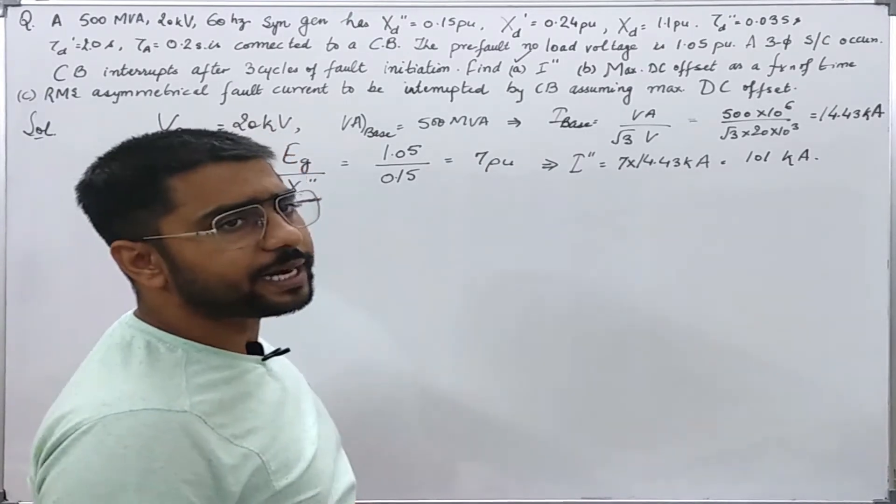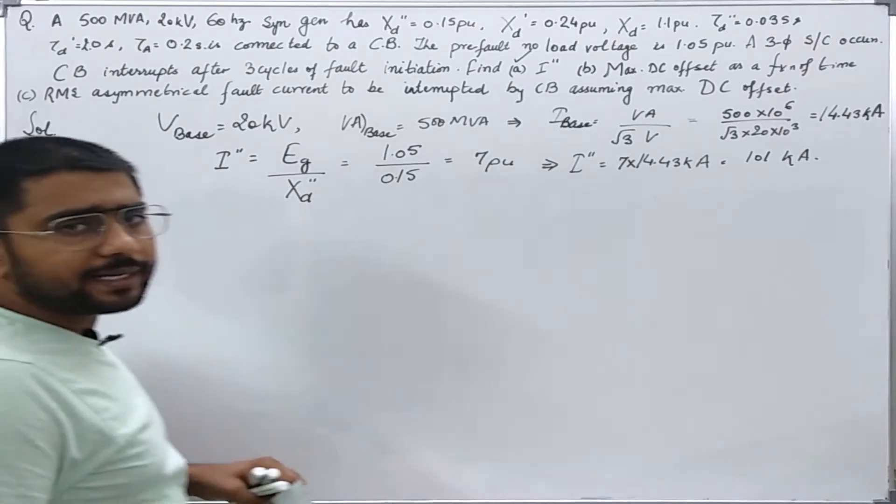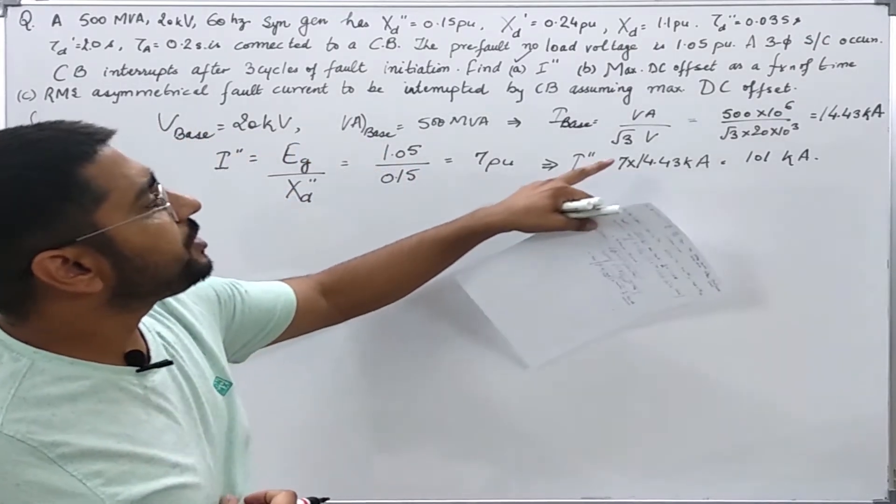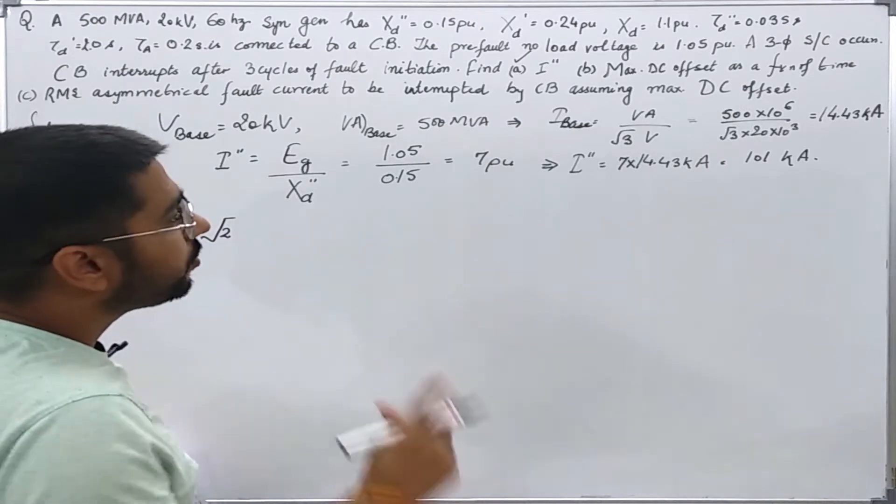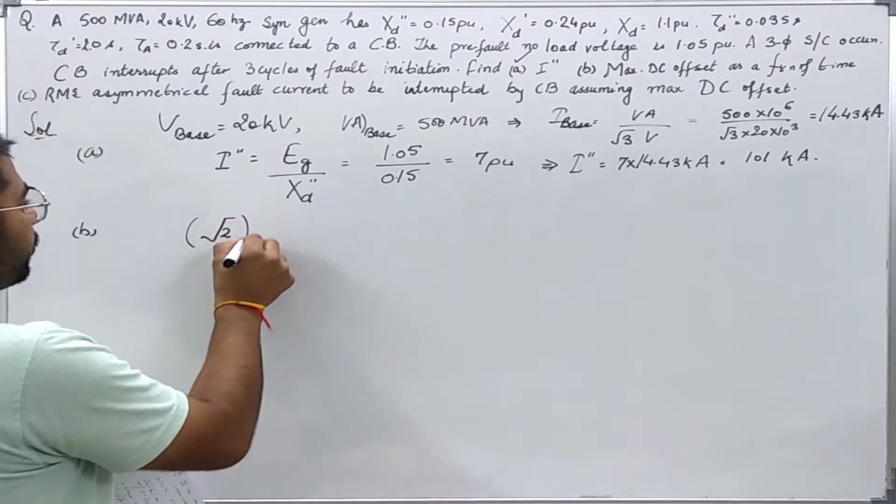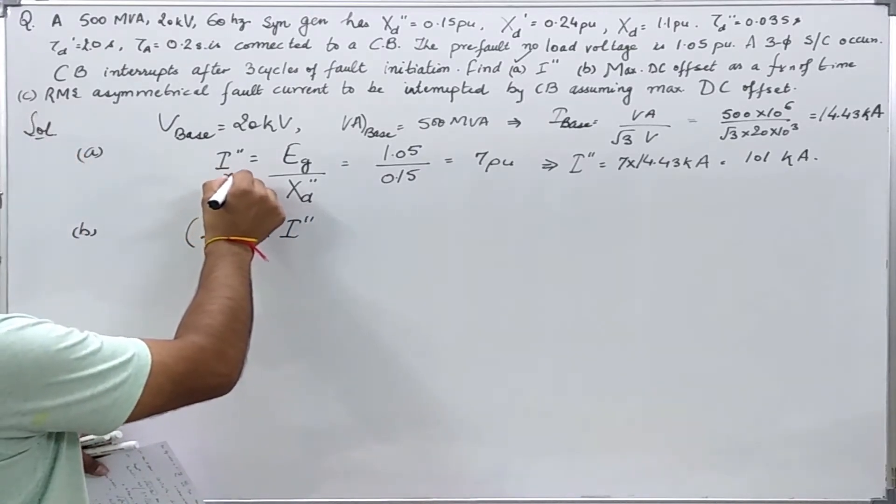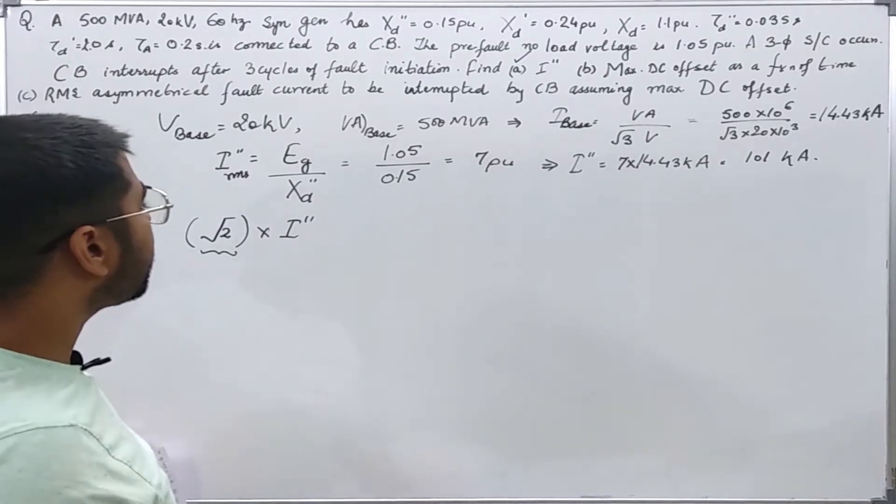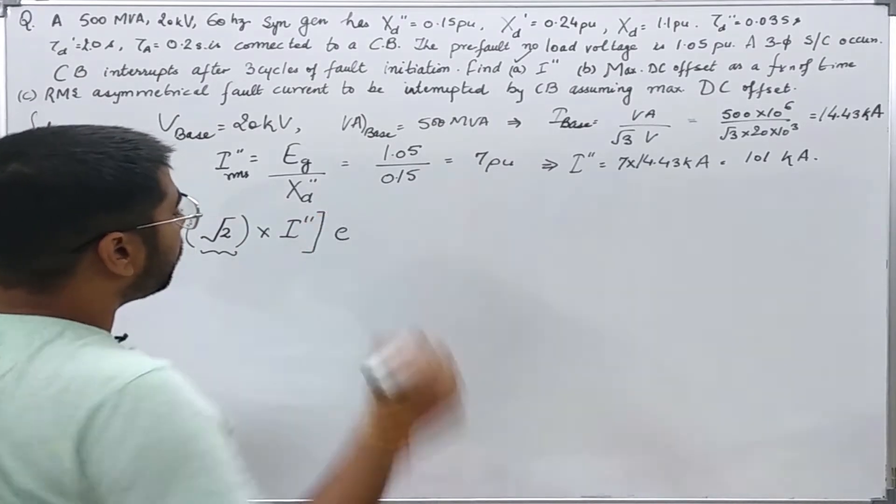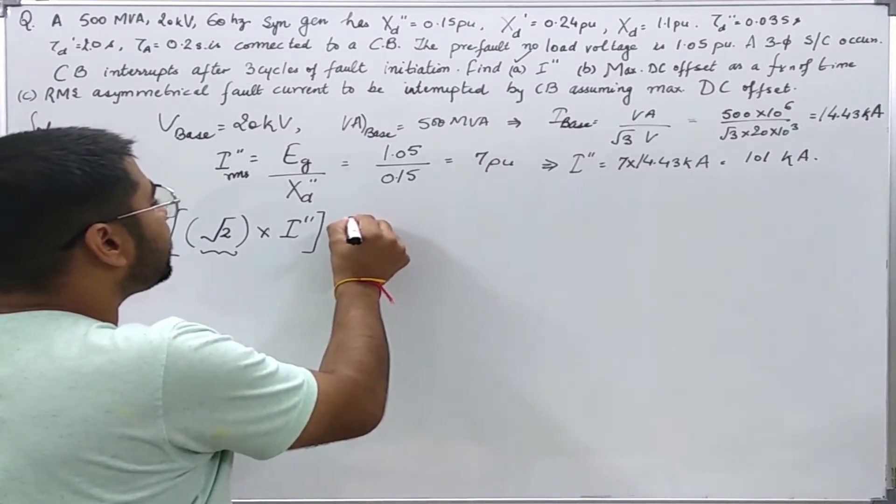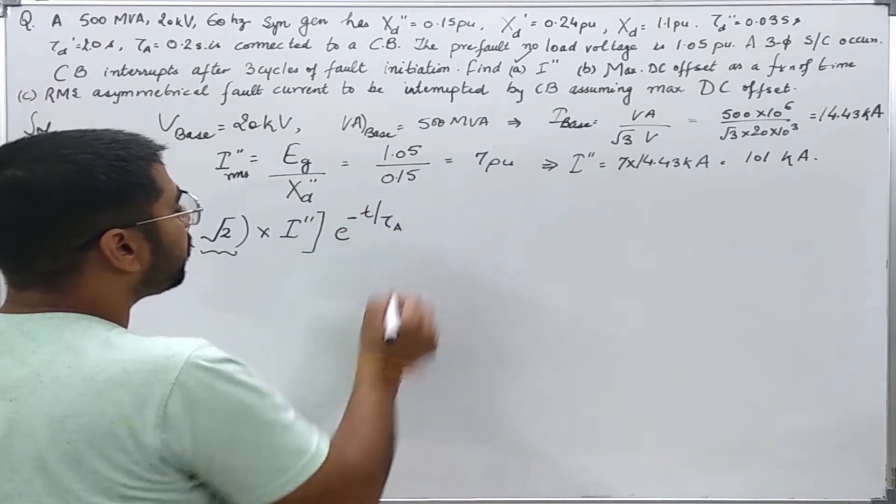Now we will move on to the second part. In our lectures we have seen that the maximum DC offset can have a value which is equal to the maximum value of the symmetrical fault current. That is it can have value root 2 times the sub-transient fault current value. This is an RMS, that's why I have to put root 2 here. Now this DC offset will dissipate or die down with exponential form and since it is flowing in the armature winding, its time constant will be the same as the armature winding time constant.